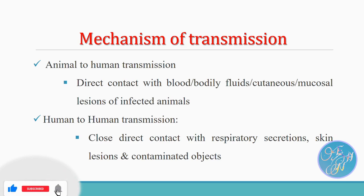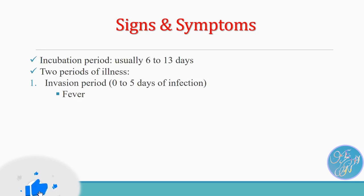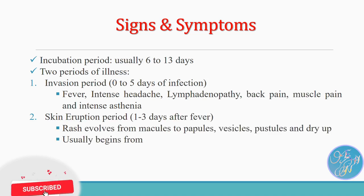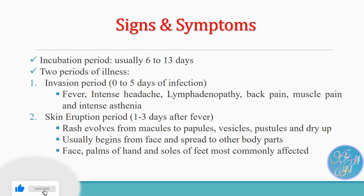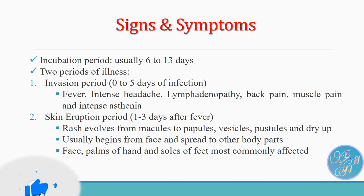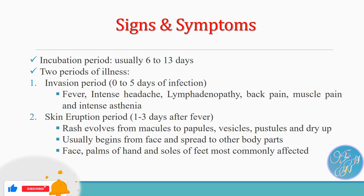The symptoms of MPOX typically appear within 3 to 17 days after exposure. There are two periods of illness: the invasion period and the skin eruption period. The invasion period usually lasts for 5 days and includes fever, headache, and muscle aches. The skin eruption period starts after 1 to 3 days of fever, with a distinctive rash that progresses from flat lesions to pustules. The rash often starts on the face and then spreads to other parts of the body.